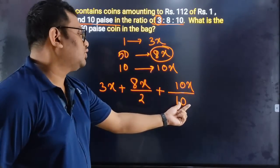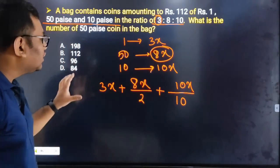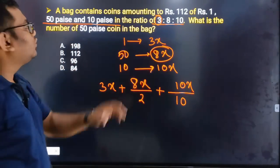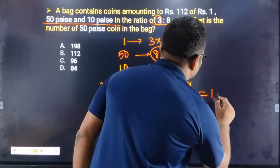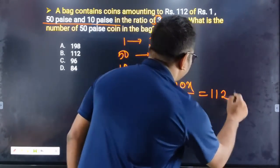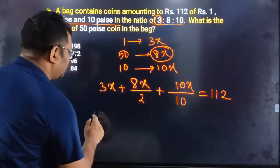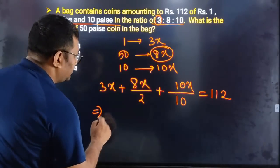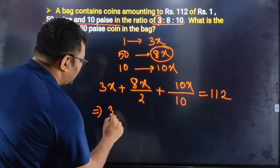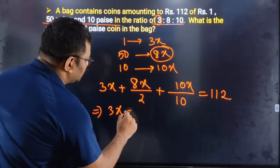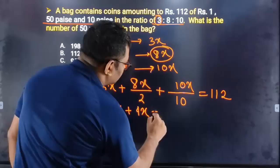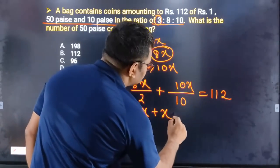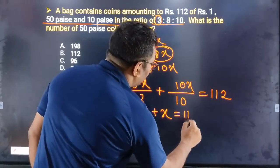Divided by this, so this is equal to 112. So the calculation of the next formula: 3x plus 4x plus x is equal to 112.